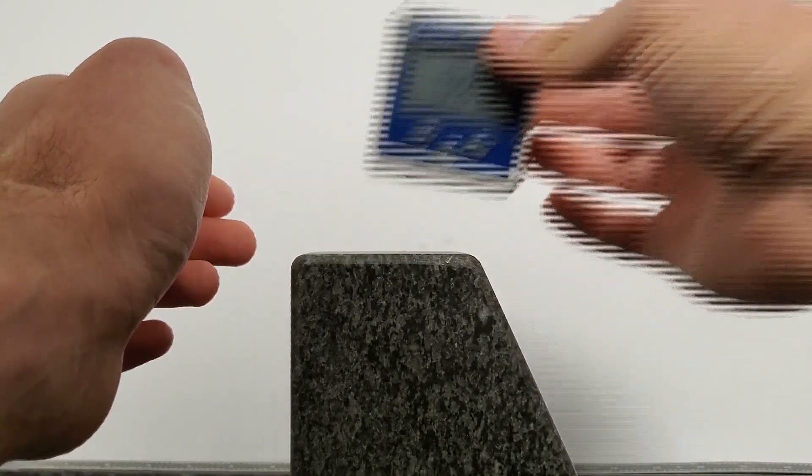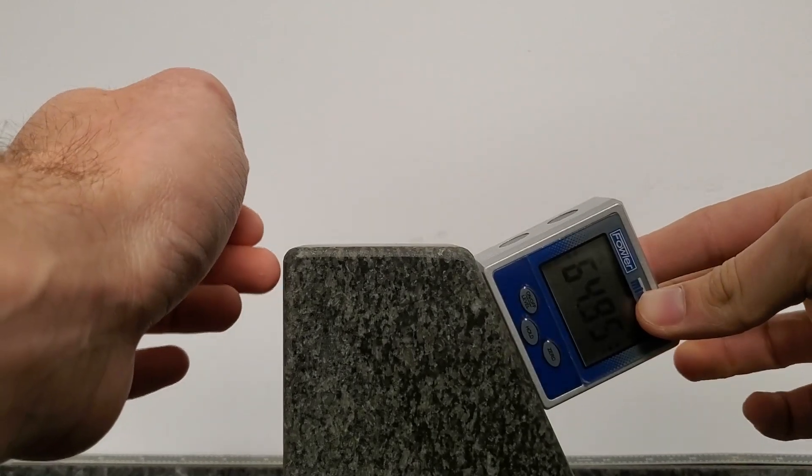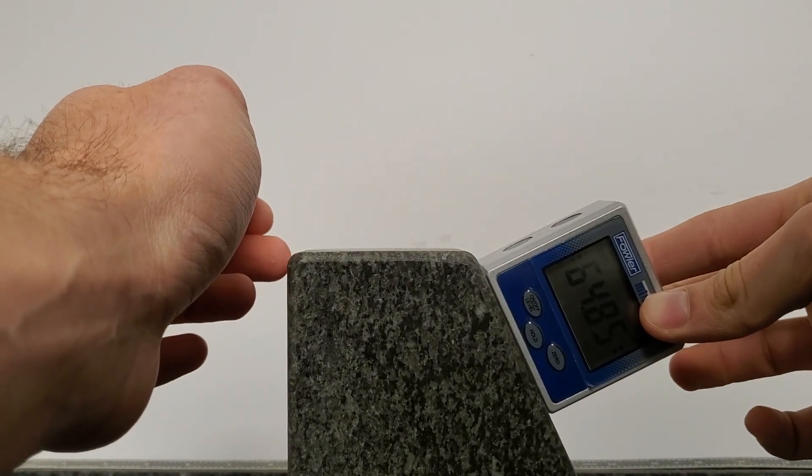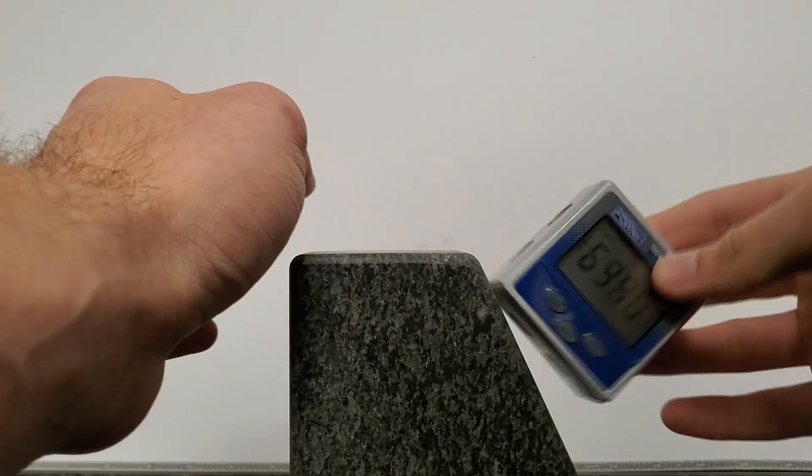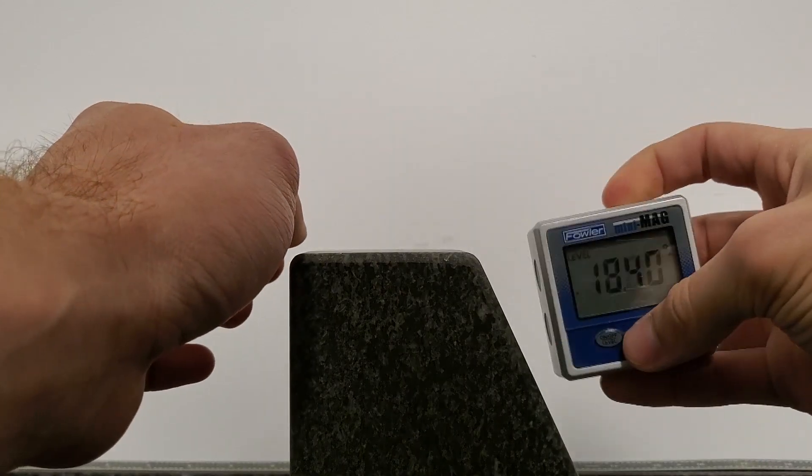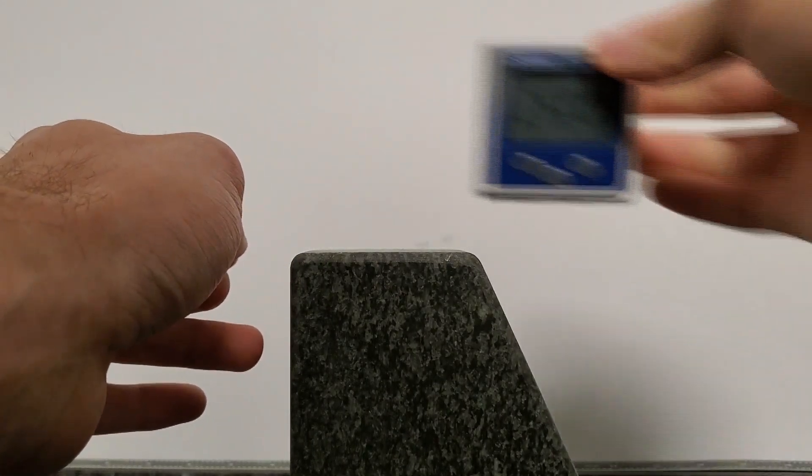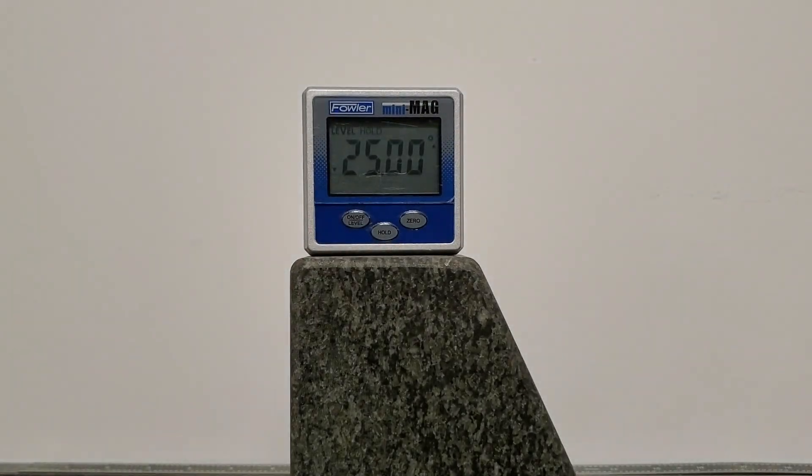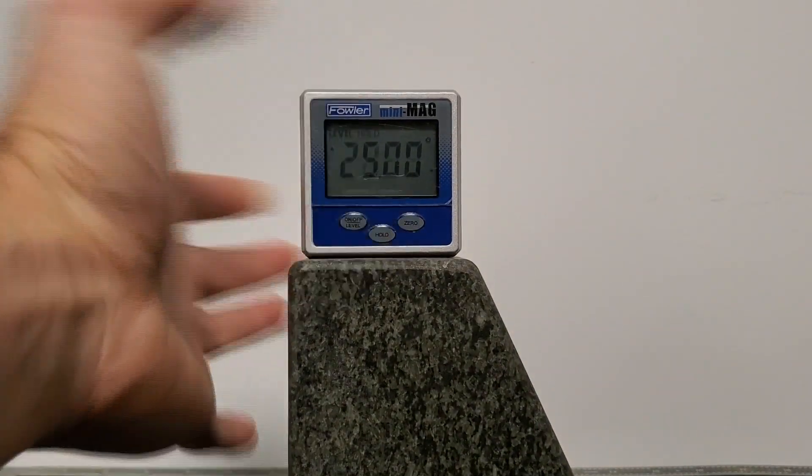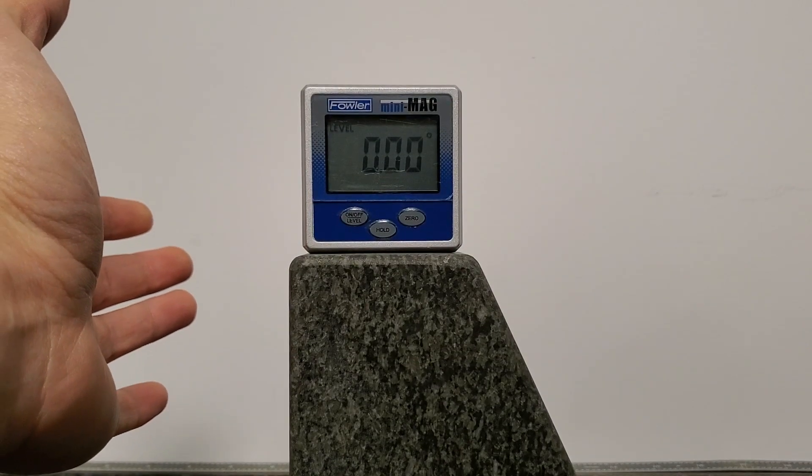Then taking a measurement is as easy as placing it on the surface you want to read. There's also a hold function on this center button. You can take a measurement, click hold, and it'll stay at that measurement until you hit hold again to return to the true zero.